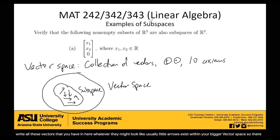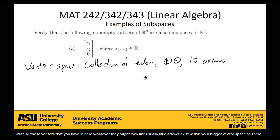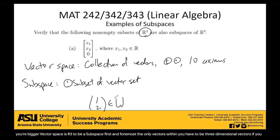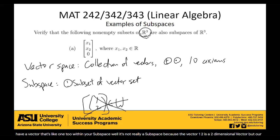So there are a couple rules to be a subspace. First of all, you have to be a subset of your vector set. So for instance, if your bigger vector space is R3, to be a subspace, first and foremost, the only vectors within you have to be three-dimensional vectors. If you have a vector like 1, 2 within your subspace, well, it's not really a subspace, because the vector 1, 2 is a two-dimensional vector, but our greater vector space is three-dimensional. So all the vectors in W have to exist within the bigger vector space, V.